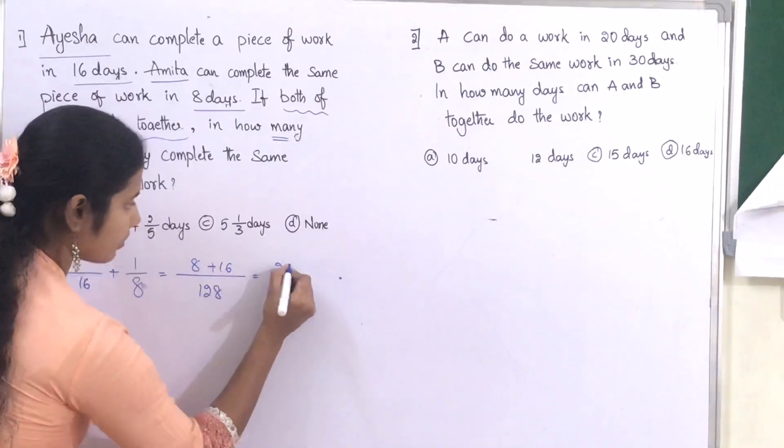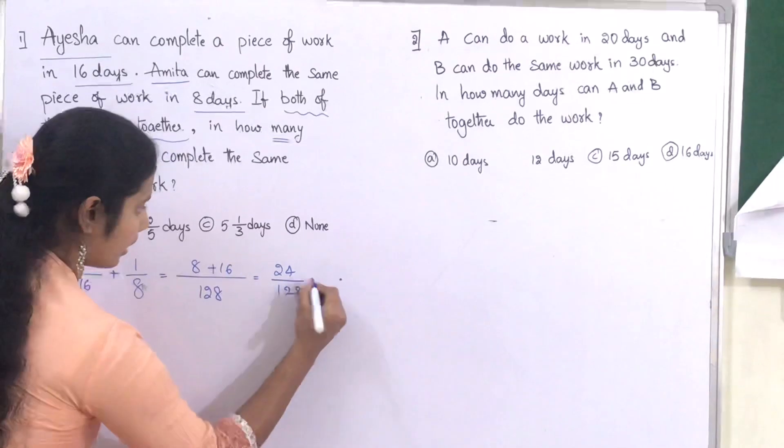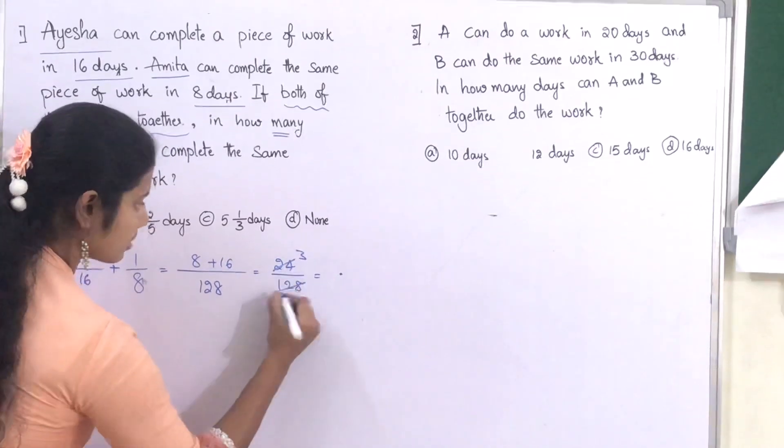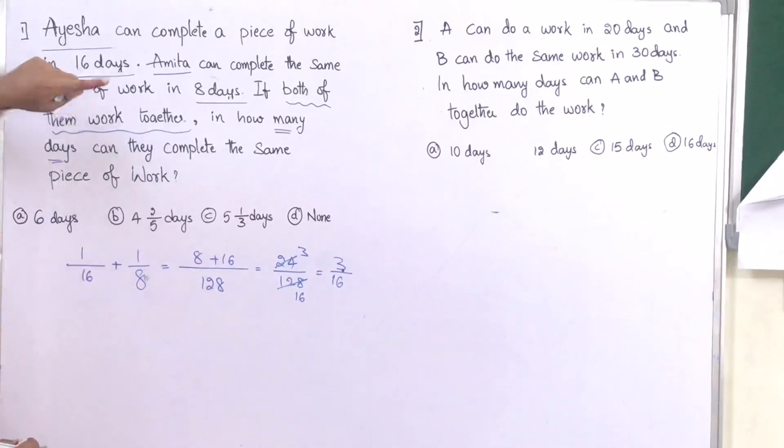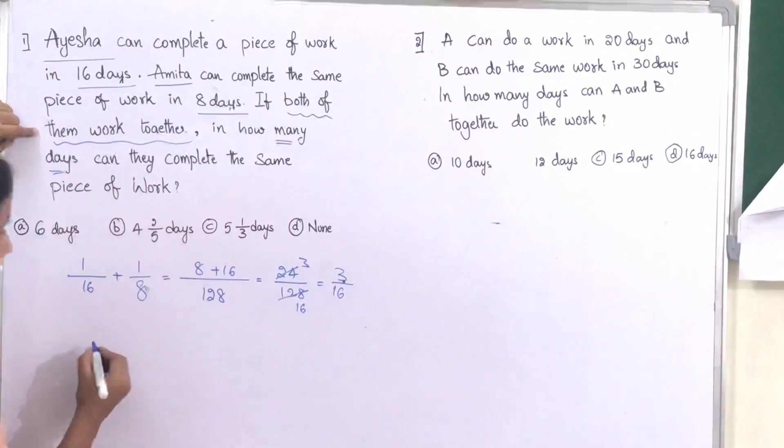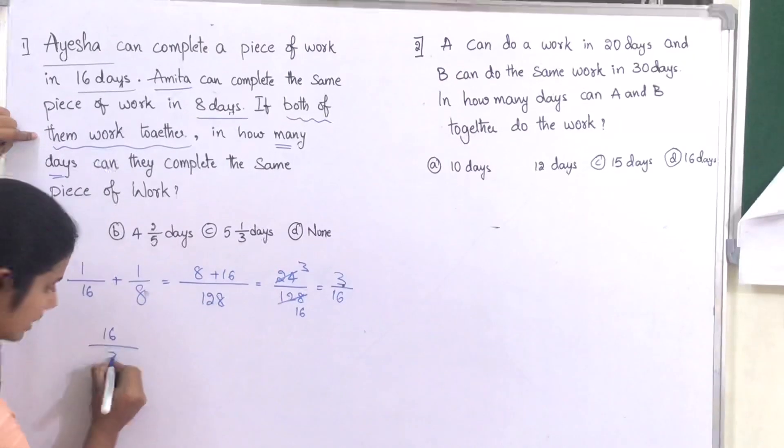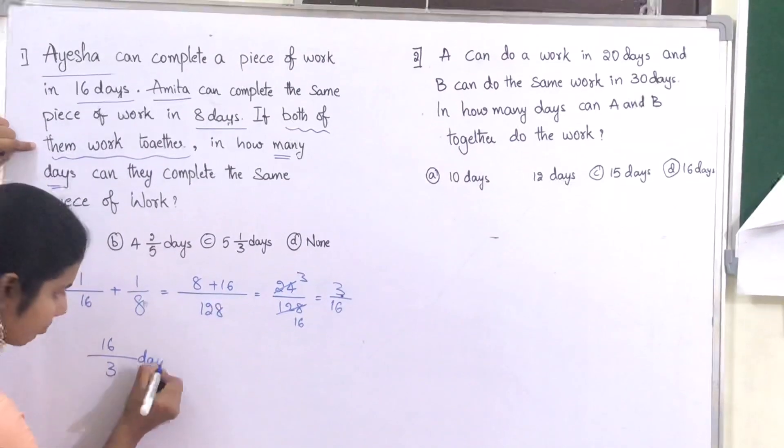By doing LCM, we get 128 upon 8 plus 16, which equals 24 by 128. Simplifying: 8 threes, 8 sixteens, 3 by 16. If both of them work together, it takes totally 16 by 3 days to complete the work.